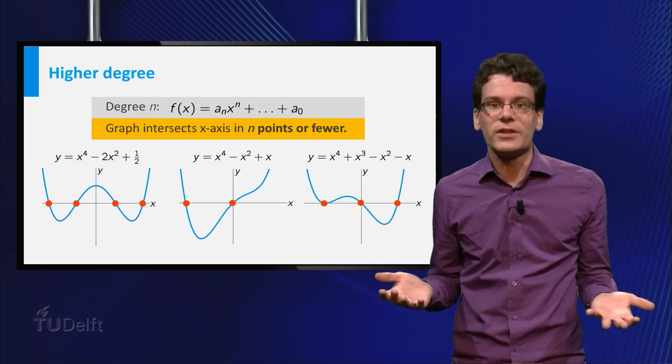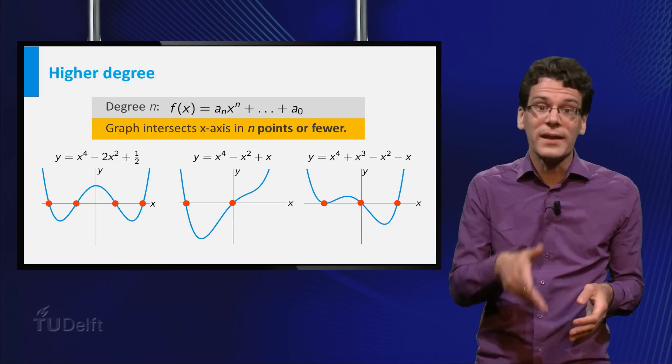Intuitively, you can think of it as follows. The higher the degree, the more wobbly the graph may look.